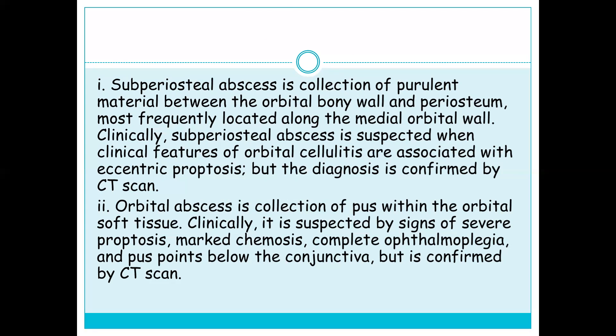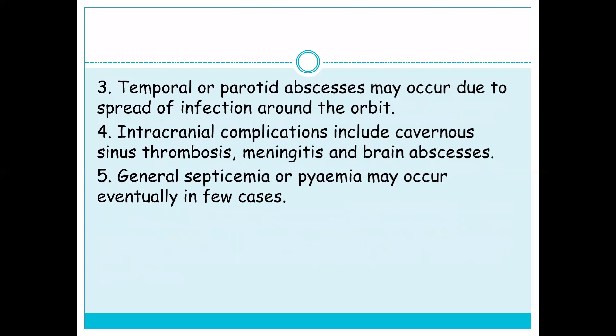An orbital abscess is a collection of pus within the orbital fat. Clinically it is suspected by signs of severe proptosis, marked chemosis, complete ophthalmoplegia, and pus pointing below the conjunctiva, confirmed by CT scan. Temporal and subperiosteal abscesses may occur due to spread of infection around the orbit. Intracranial complications include cavernous sinus thrombosis, meningitis, and brain abscess. Septicemia or pyemia may occur in a few cases.